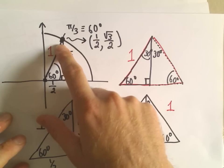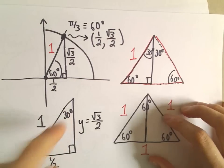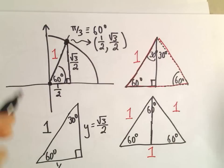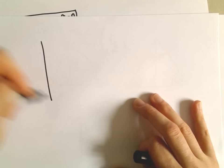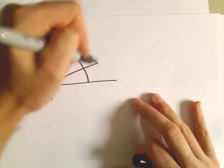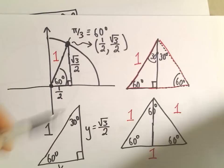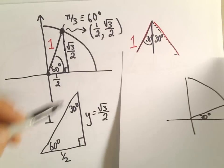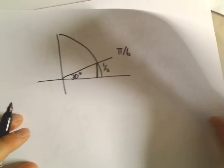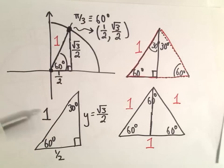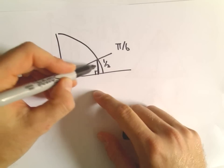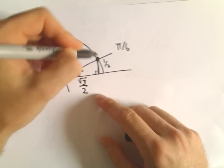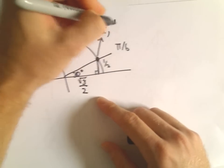To figure out the last one — π over 6, or 30 degrees — you're basically using the exact same triangle. The side opposite 30 degrees has a length of 1/2. So I know this has a length of 1/2. This angle is 90 degrees, and the remaining angle would be 60 degrees, which makes the other side √3/2. So, by the same argument, you can figure out that the point at 30 degrees is (√3/2, 1/2).